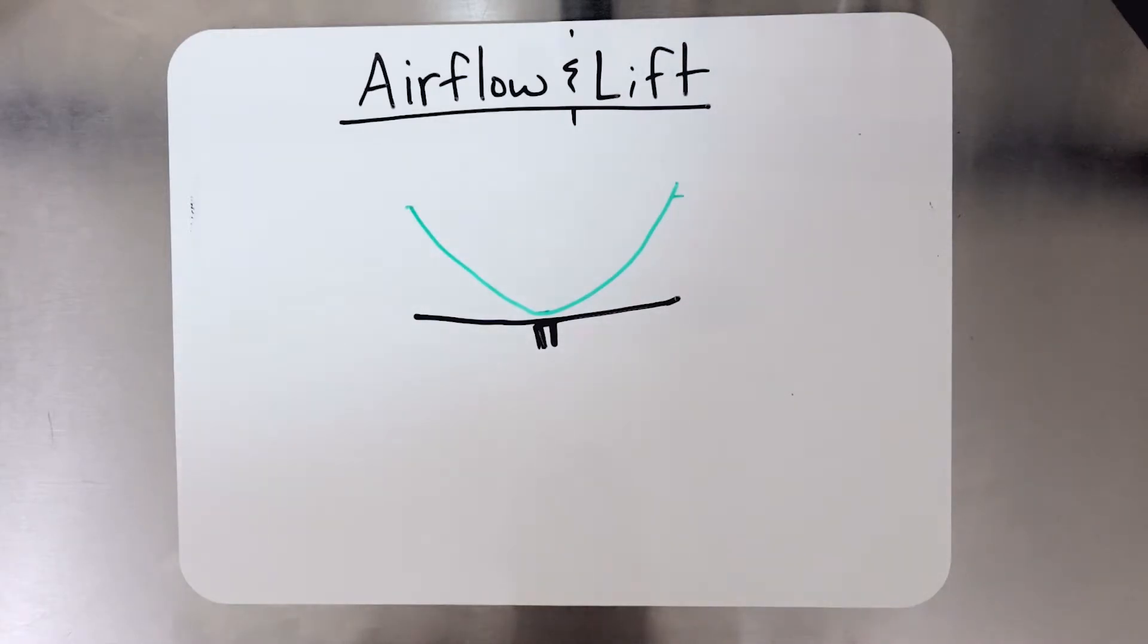Now this is where we start to get into the concept of induced flow. Induced flow is essentially the downward component. That's the air that's being pushed down under the rotor system.